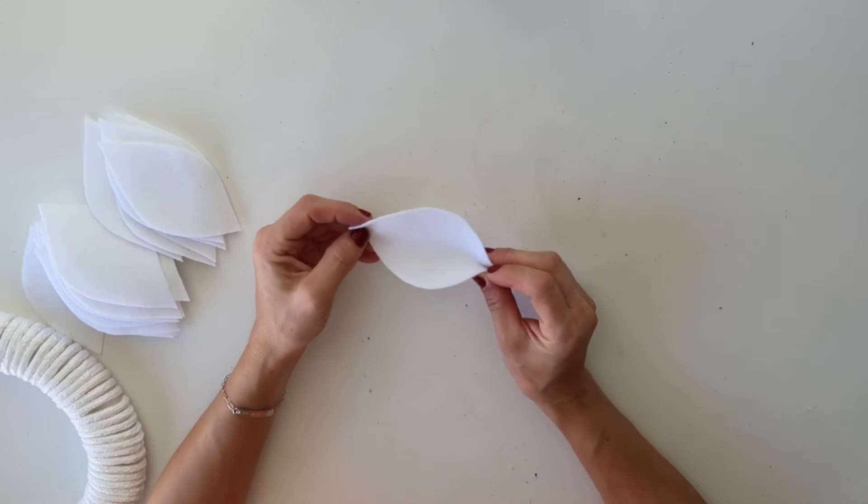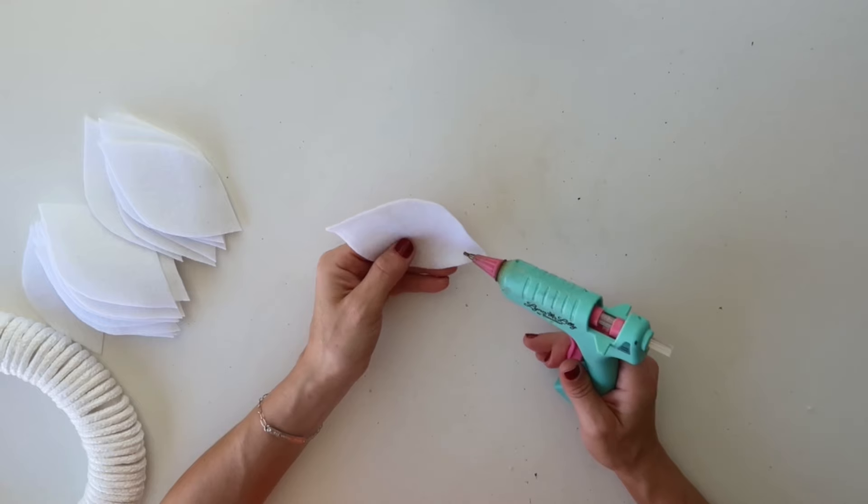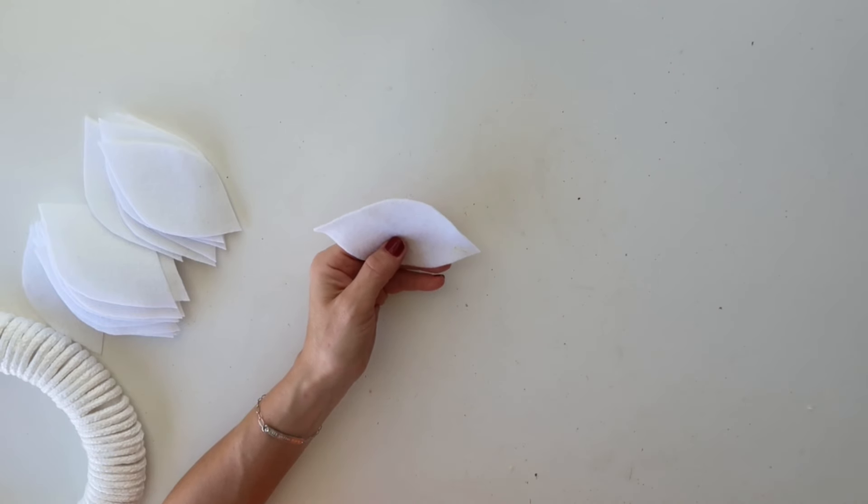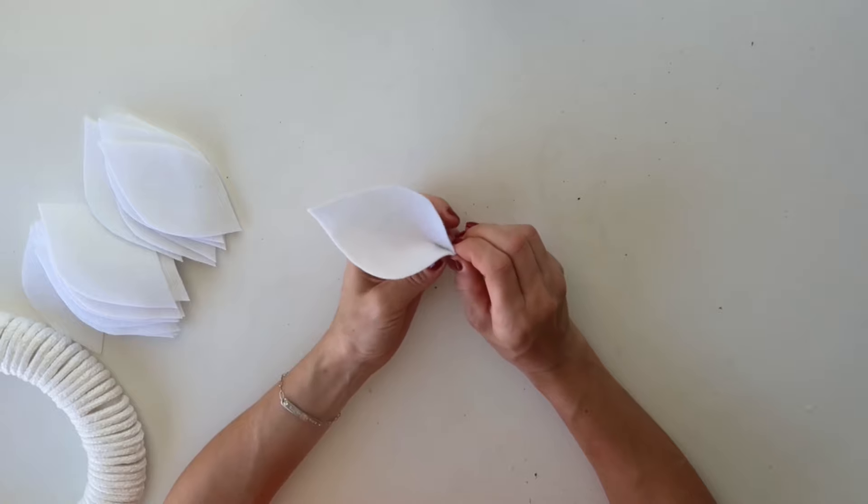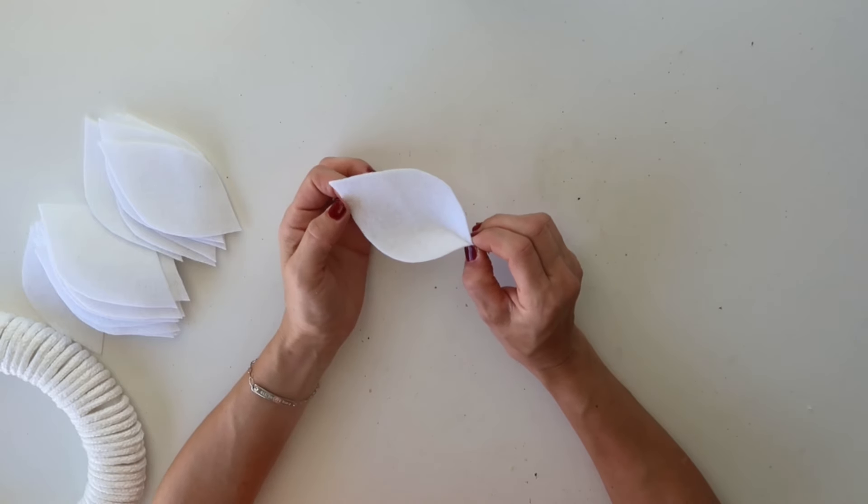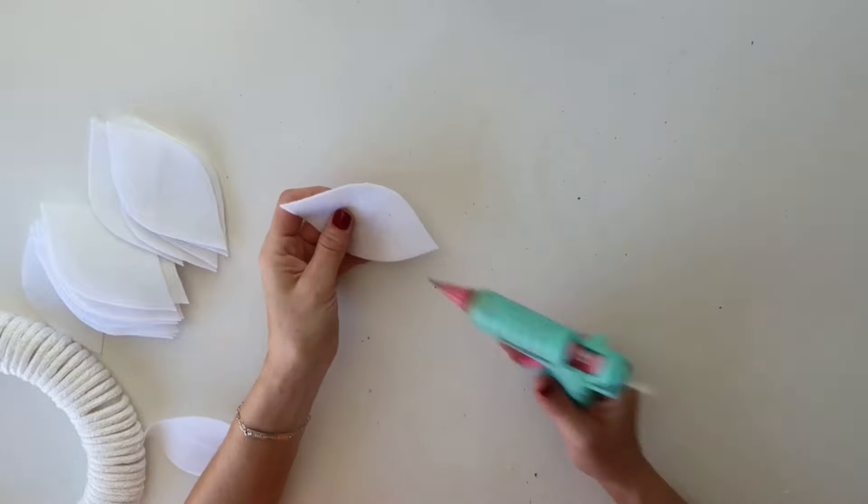Now that that's done, I will take each of these leaves and I will add a little dab of hot glue on one of the corners and I will pinch it like so. That way it will really get a shape of a real leaf. So here it is, this is how the first one looks like.